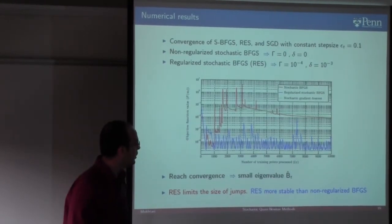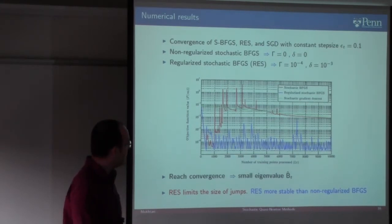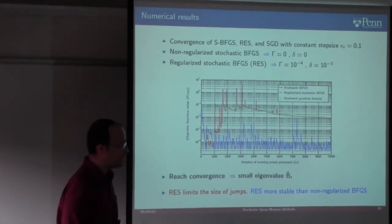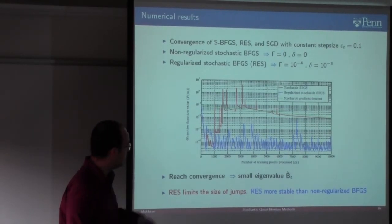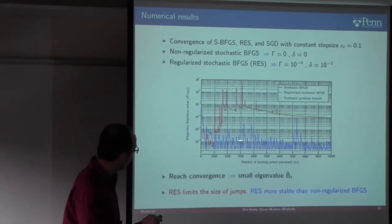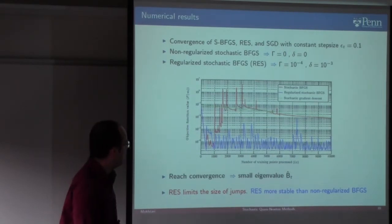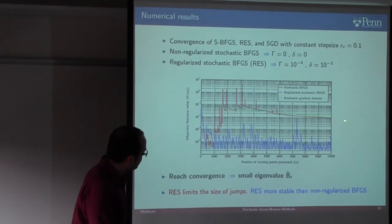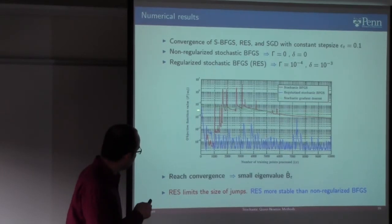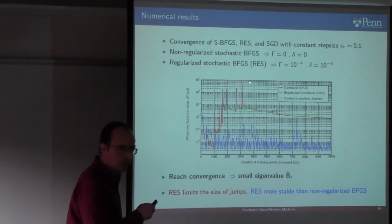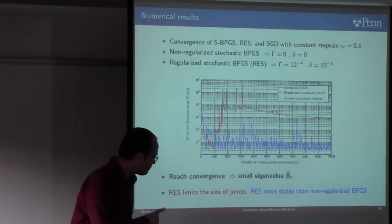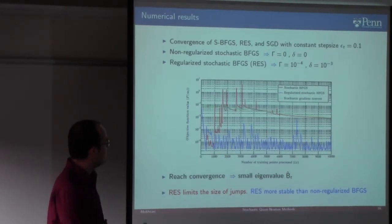It's also important to show why regularization matters. Using constant step size to avoid diminishing the stochastic noise, we can see that RES converges and oscillates around the optimal solution as expected. SGD converges to the optimal solution but very slowly. The stochastic BFGS without regularization gets close to convergence but then diverges, due to the small eigenvalue of B_t issue I described. This illustrates why regularization is essential.